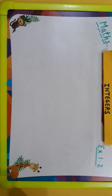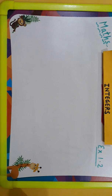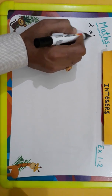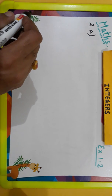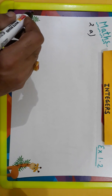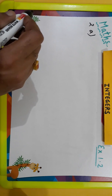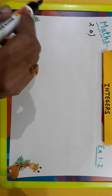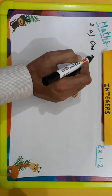Dear students, after doing exercise 1.1 of the chapter, let us now move on to exercise 1.2. Before I begin, I would like to tell you to sit with your book so that all the things become crystal clear to you. Here in question number 2, let us do part A. The question says: write a pair of negative integers whose difference gives 8. There are infinite pairs of integers which will satisfy this case, so I am taking one such pair.